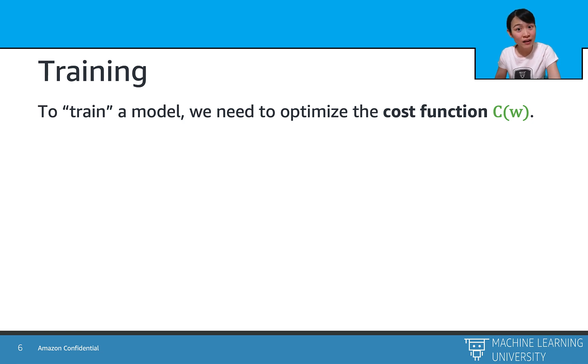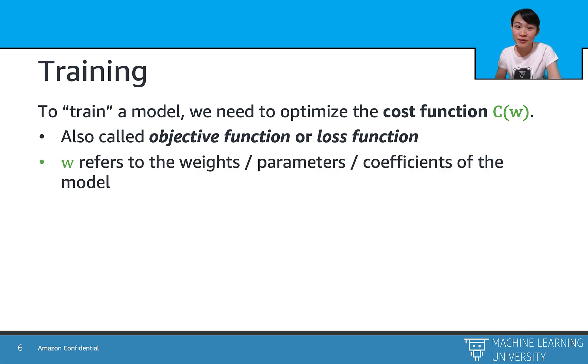And now we know the error that a model makes, so how do we correct the error? That brings us to the most fun magic part of deep learning, that is the model training. To train a model, we need to optimize the cost function, that is to optimize the error of the cost function as much as possible. The parameters we need to train are these w's, which are also called the weights or the coefficients of the model.